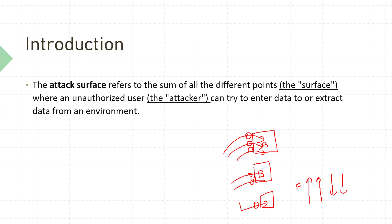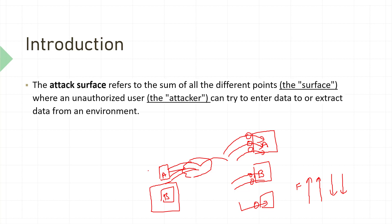Another example: System A connected to the internet is more exposed, so there's a higher chance of attack through the internet. System B, part of an internal network protected by firewalls as security controls, is much more difficult to attack. Attack surface is very important for how you plan your information security.